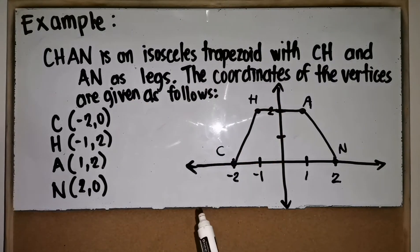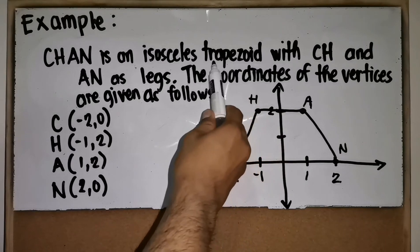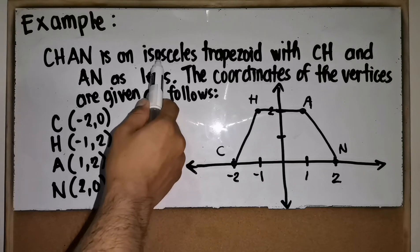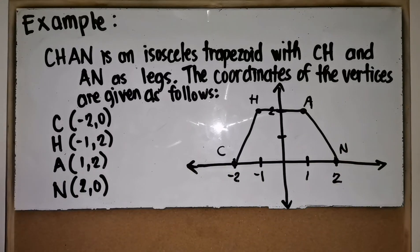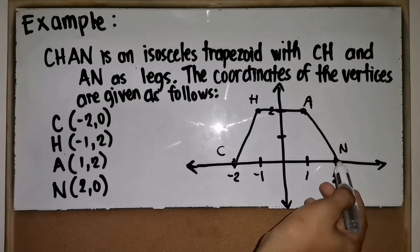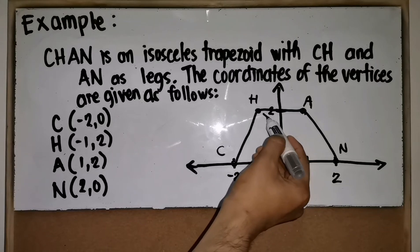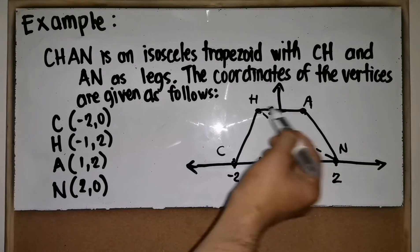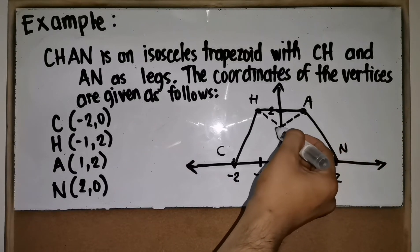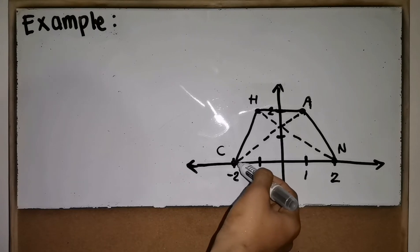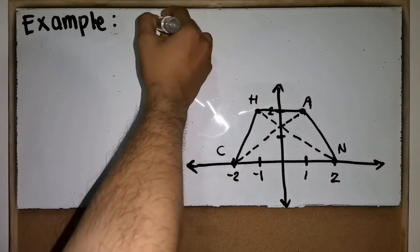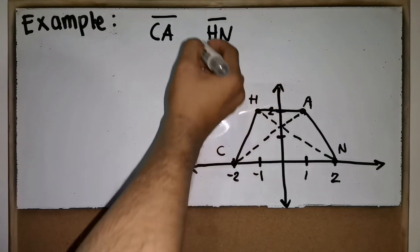When we say isosceles trapezoid, it is a trapezoid where the two legs should be equal in length. To draw the diagonals, connect each vertex to the opposite vertex with broken lines. The diagonals are segment CA and segment HN. To prove whether the diagonals are congruent, we will apply the distance formula.